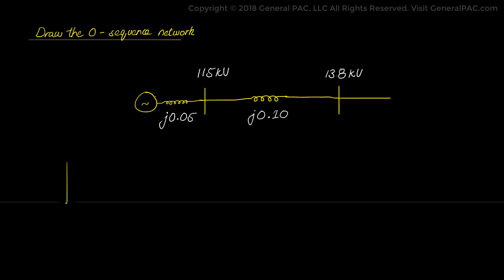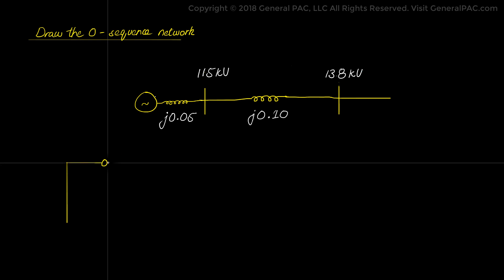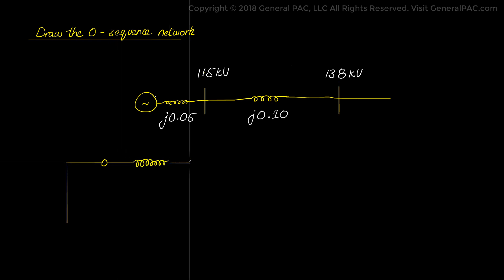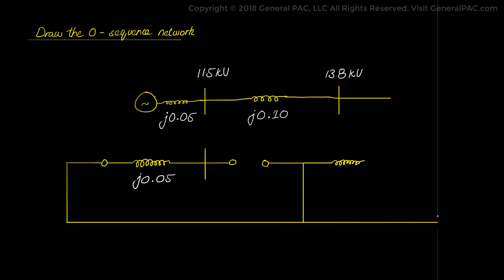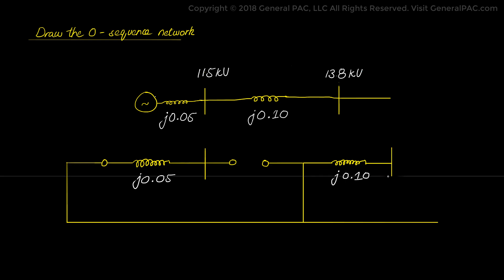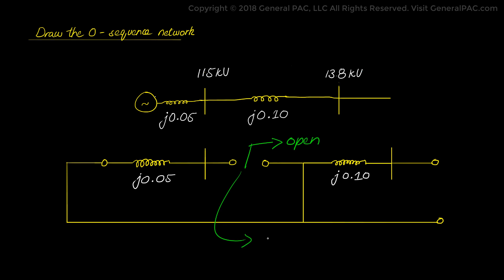Now we move towards the zero sequence network diagram. Just like the negative sequence network diagram, there is no voltage source. There is the same generator impedance of j0.05 per unit, then there's a line to indicate the 115 kV bus, and then we reach the transformer. We pick up the zero sequence model for the delta-Y transformer discussed earlier in the video and insert it into the network with an impedance of 0.10 per unit. Then there's a line to indicate the 13.8 kV bus, and the network is complete. Notice that in the network diagram for the transformer, there's an open for the high voltage side — representing the delta — and on the low voltage side, there's a short immediately before the 0.10 per unit impedance, which represents the low voltage Y side of the transformer connected to ground.